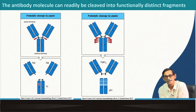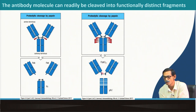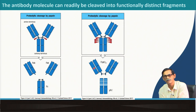Another enzyme, pepsin, cuts at multiple sites toward the C-terminal end of the disulfide bond, breaking the Fc into multiple pieces. However, the two Fab fragments remain joined because their disulfide bond is intact — this joined fragment is called F(ab')2 (fab-prime-2) because it has two Fab units together, giving it a valence of two, just like intact antibody. After cutting with either papain or pepsin, the fragments still retain antigen-binding capacity.